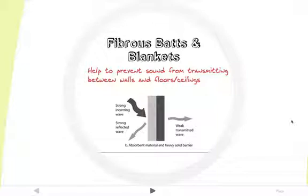Fibrous batts and blankets will prevent sound from transmitting either between two faces of a partition in a stud space or above the suspended ceiling between the ceiling and the floor above. These materials absorb sound as it passes through the partition's cavity, but their ability to absorb this sound is limited when the wall is tied very rigidly together with wood studs. They improve sound transmission loss significantly with light gauge steel studs. The performance of fibrous batts and blankets is determined by their thickness and they should never completely fill a cavity.